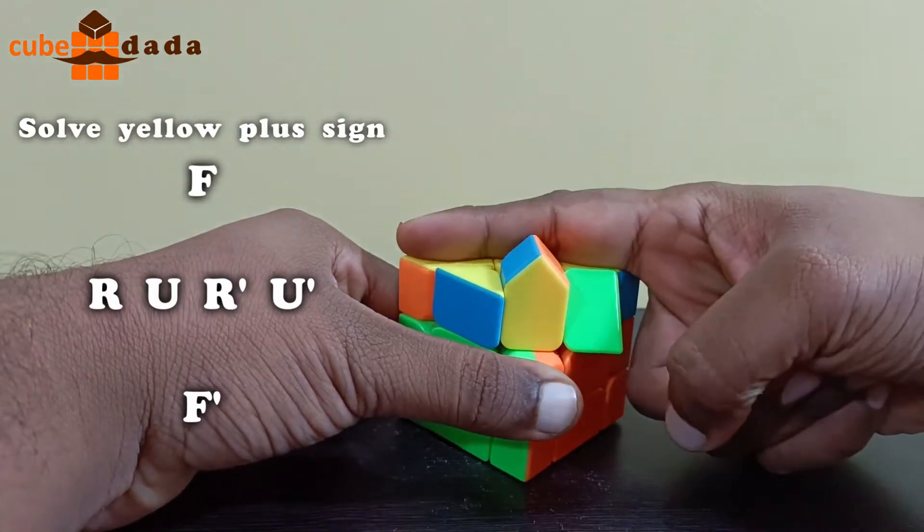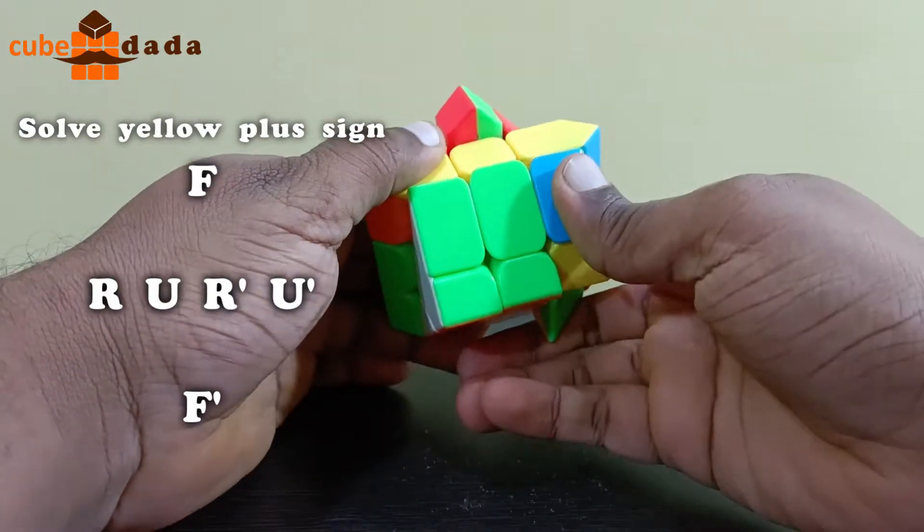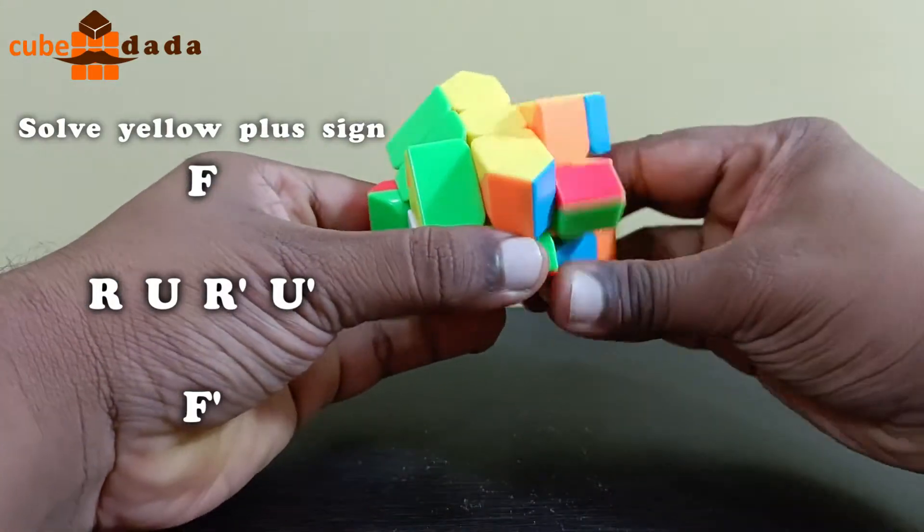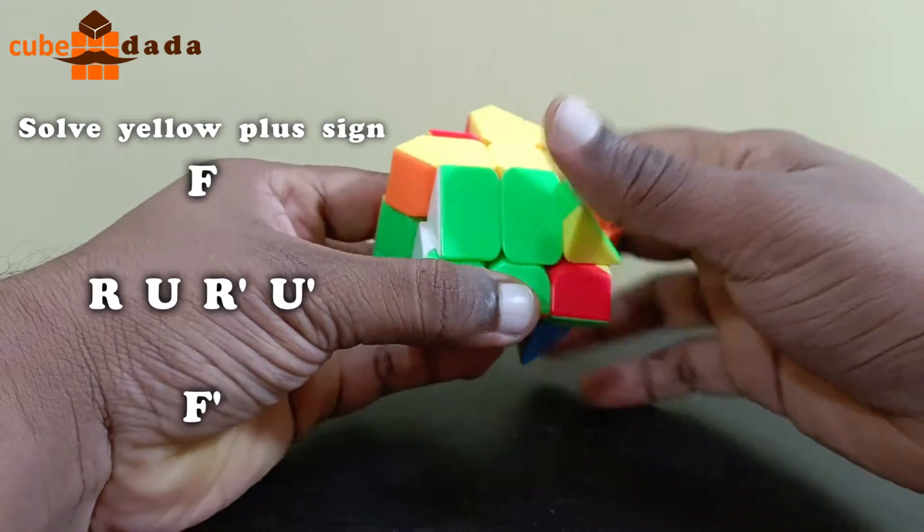I will keep this straight line horizontal, and now let's apply this formula again. F, R, U, R dash, U dash, F dash.